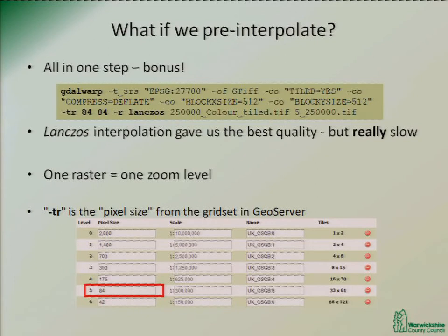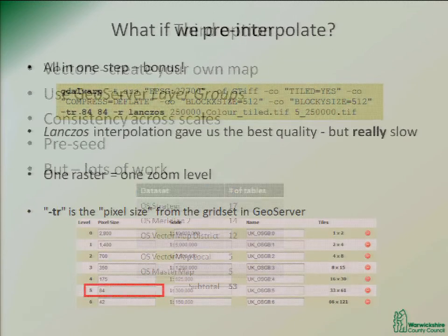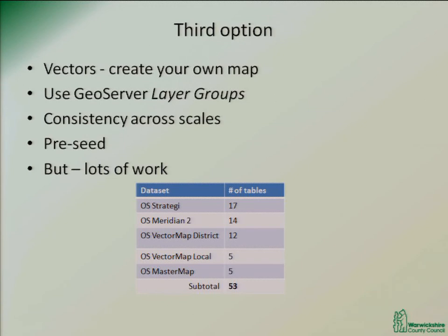The pixel size to use is from the pixel size column in the grid set on GeoServer. I can't remember exactly how that works but it did work when I did it several months ago. There is also a third option for your base map tiles, and that's to use vector data like MasterMap or OpenStreetMap.